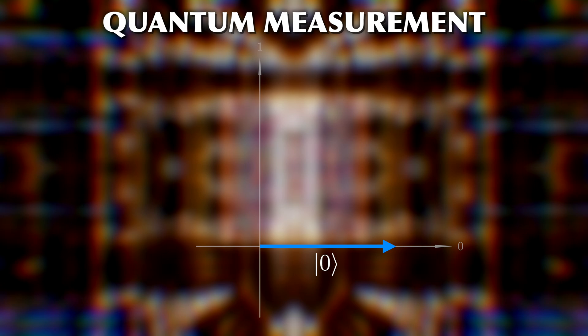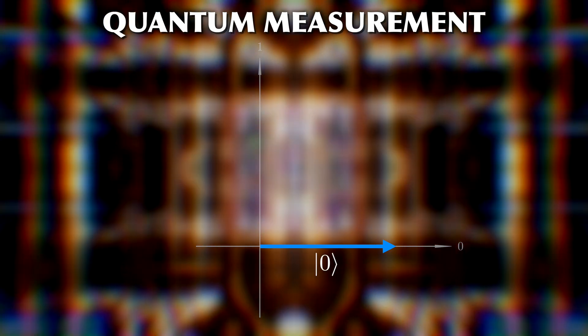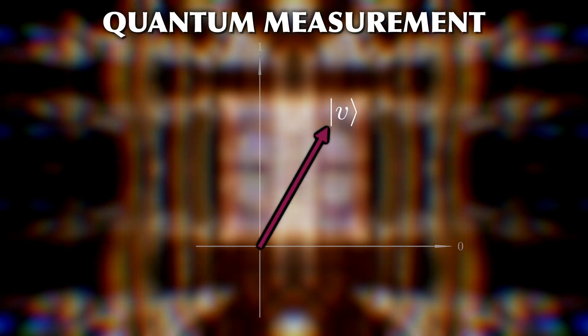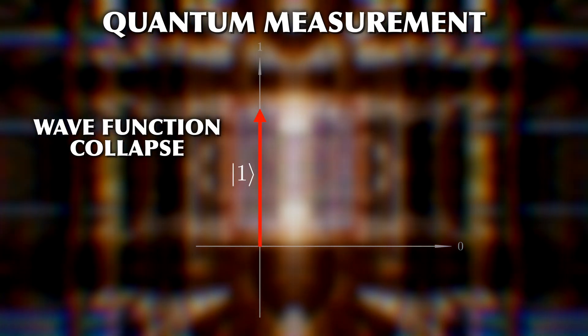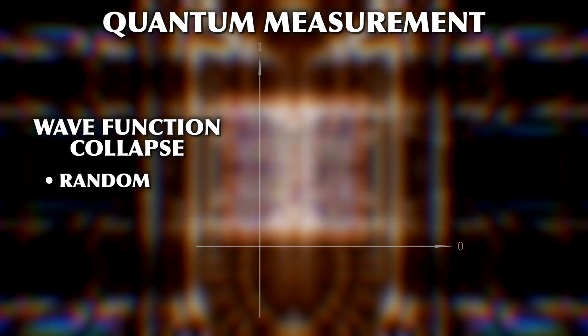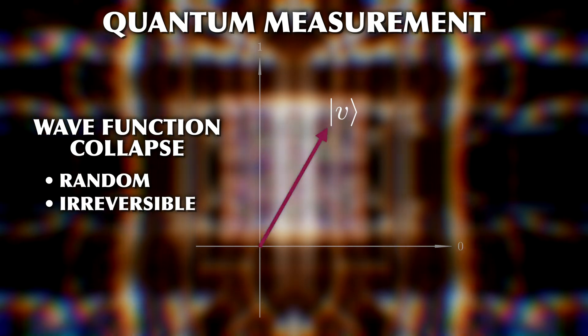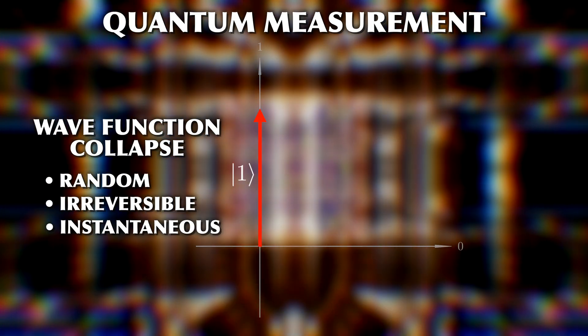This projection onto a basis state triggered by measurement is called state reduction or the collapse of the wave function. And as far as we can tell, it is random, irreversible and almost instantaneous.